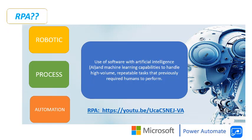Now we will see what RPA is. RPA — robotic process automation — is the use of software with artificial intelligence, AI, and machine learning capabilities to handle high-volume repeatable tasks that previously required humans to perform. These tasks can include queries, calculations, and maintenance of records and transactions. In simple words, robotic process automation allows organizations to automate tasks just like a human being was doing them across applications and systems. RPA doesn't require the development of code, nor does it require direct access to the code or database of the applications. If you want to know more about RPA, please watch the video provided in the comment section.